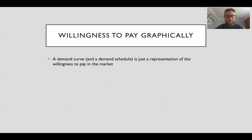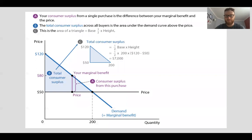Willingness to pay graphically - a demand curve and demand schedule is just a representation of the willingness to pay in the market. Over here we got a nice little thing that I got from the textbook. Your consumer surplus from a single purchase is the difference between your marginal benefit and the price or your willingness to pay. They're using marginal benefit, willingness to pay - same thing.